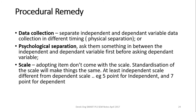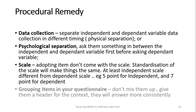When you adapt scales or adapt items, they don't come with standardized scales. Standardization of the scale can make things look a little bit the same, but you can try employing a different scale for independent and dependent variables — maybe a five-point for independent and a seven-point for the dependent. This will keep things fresh. Also, grouping items in your questionnaire: try not to mix them up and give them a header for context. This helps respondents focus and answer more consistently.